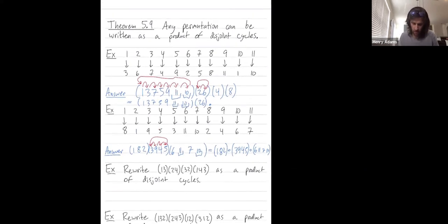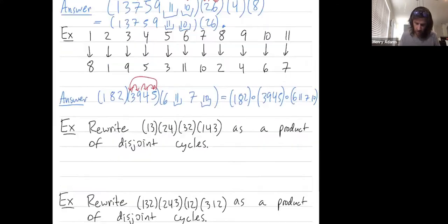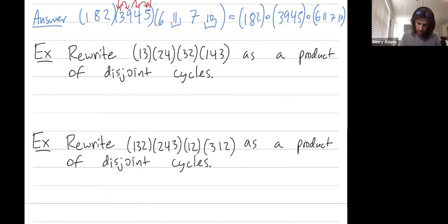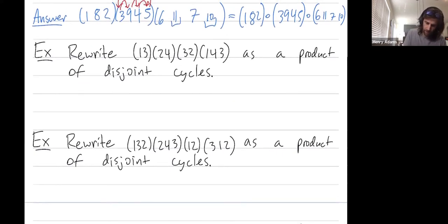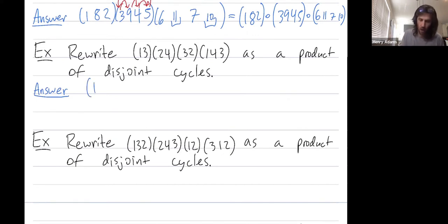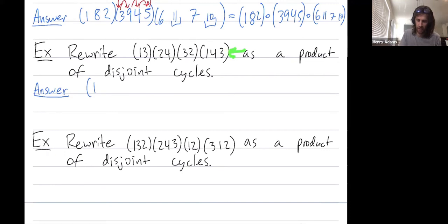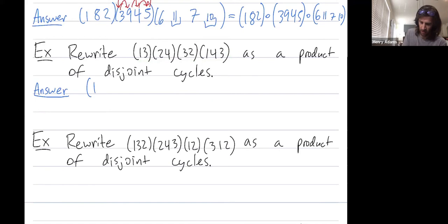So let's try to write this particular permutation in disjoint cycle form. When you write a permutation in disjoint cycle form, you always start with one and see where one goes next. I plug in numbers from right to left because, if these were functions applied to an input, this rightmost function would apply first, then the next, and so on. So I'm trying to figure out where one goes — I plug it in on the right. The first cycle sends one to four.